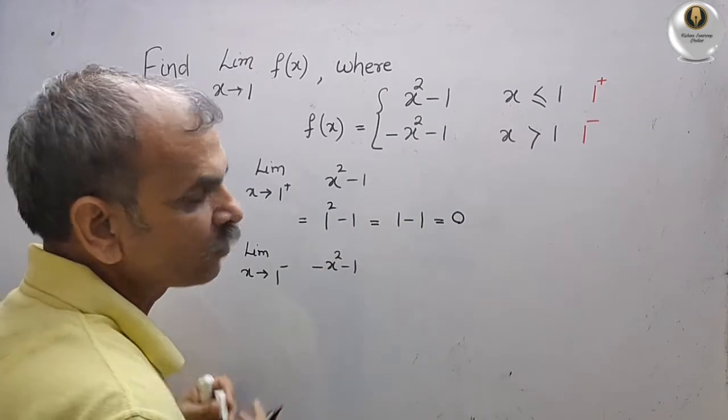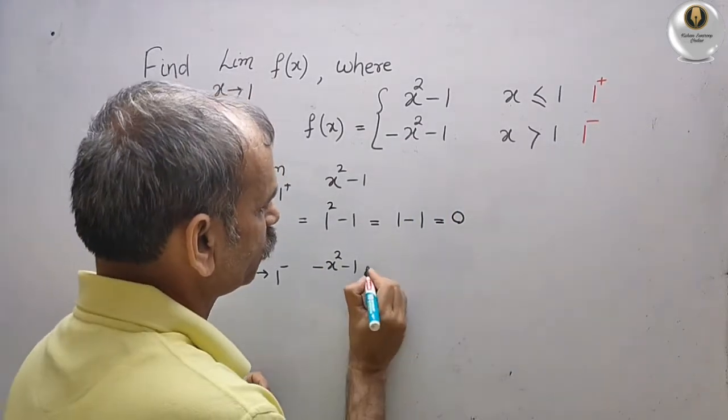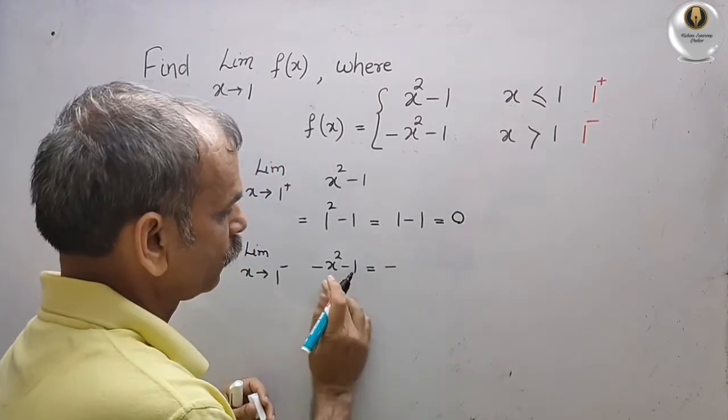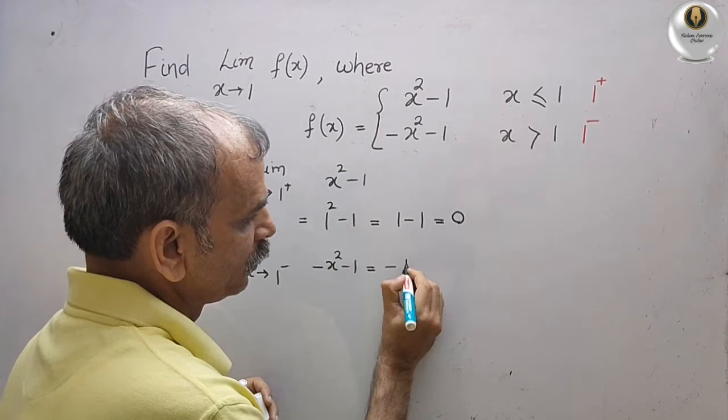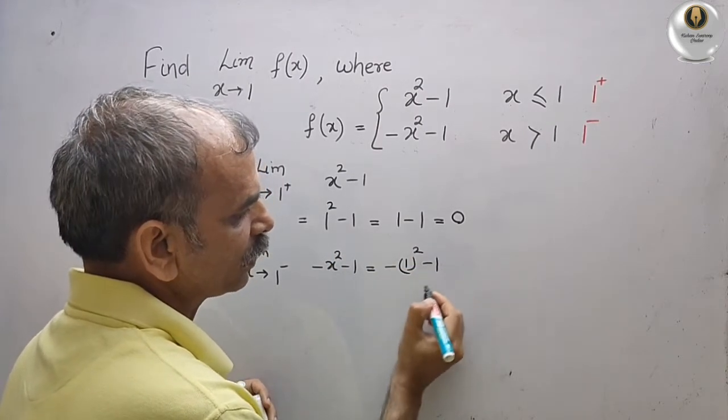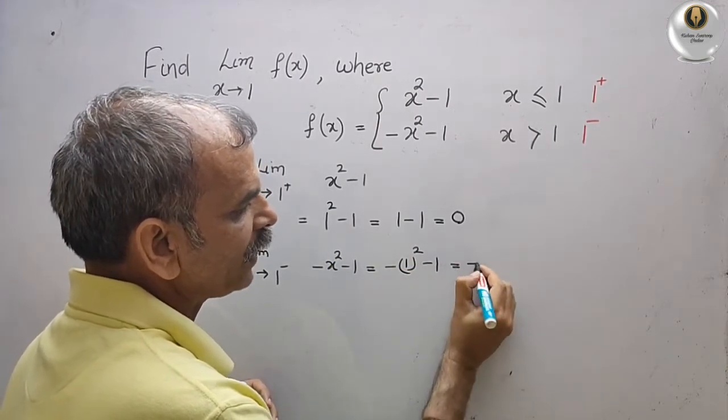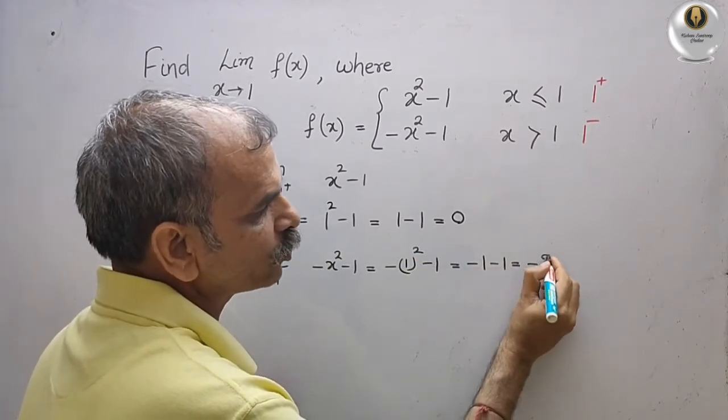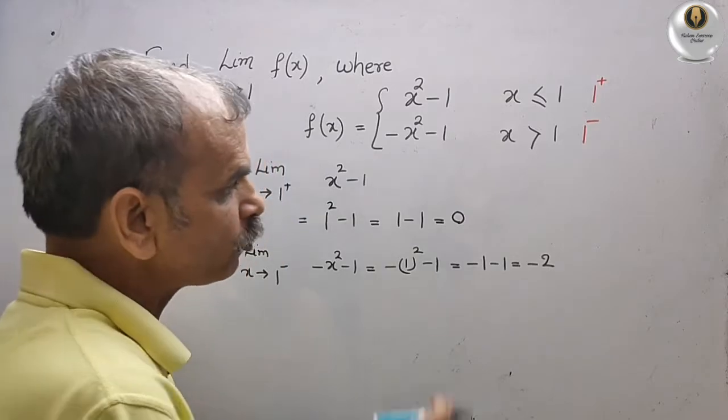Now we will take limit x tends to 1 minus. Now we will take this value: minus x squared minus 1. That is equal to minus 1 minus 1, that is equal to minus 2.